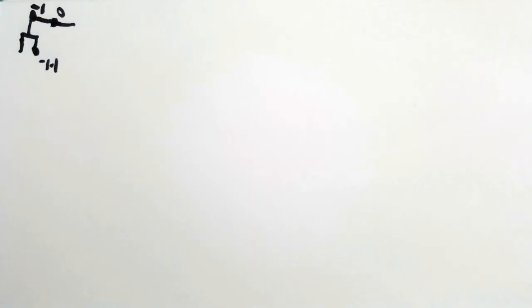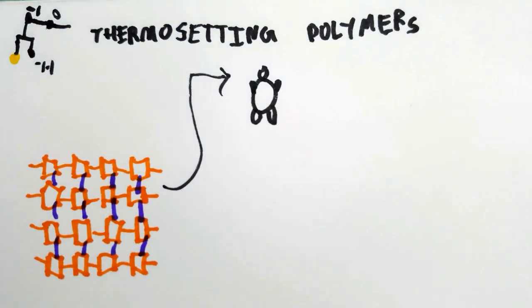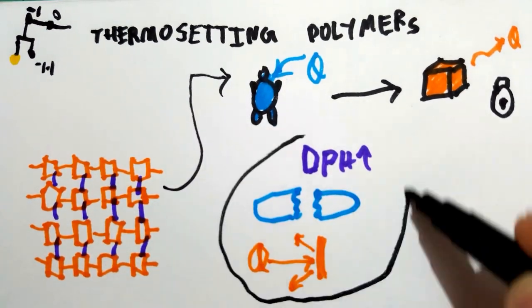Second are thermosetting polymers. These polymers become soft during first heating and then permanently harden when cooled. They are more hard, brittle and heat resistant when compared with thermoplastic polymers.